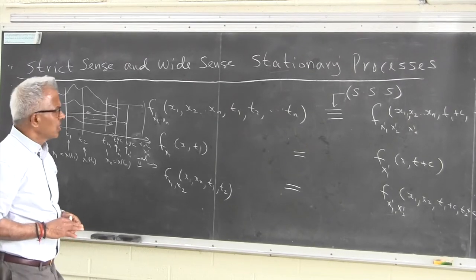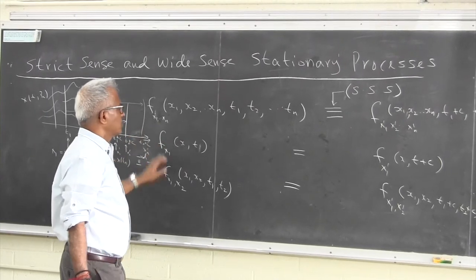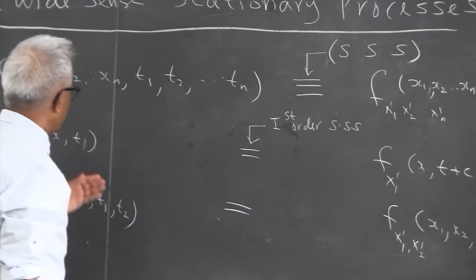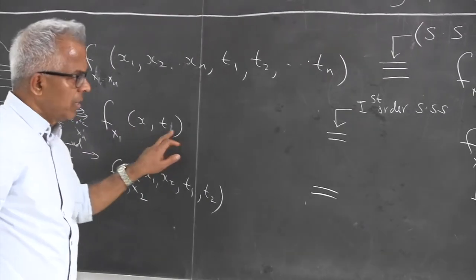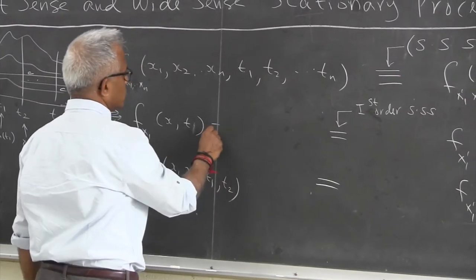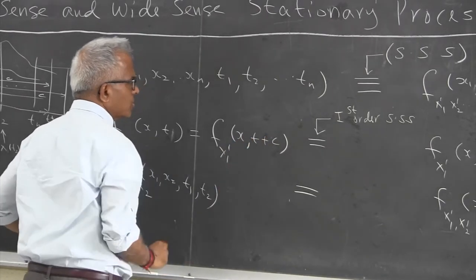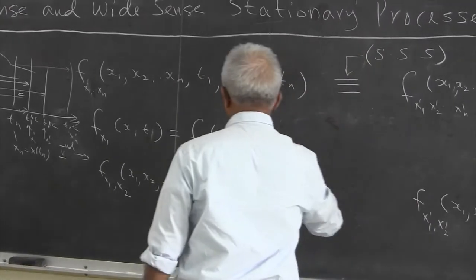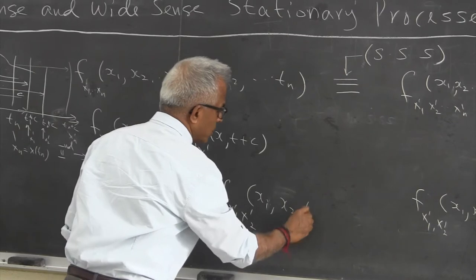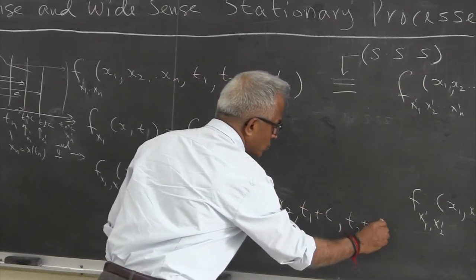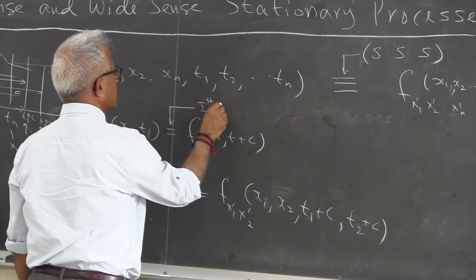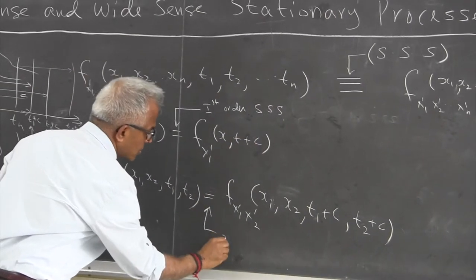We can also speak of first order and second order strict sense stationarity. The first order strict sense stationary condition means the density function of the random variable x1 generated at t and its shifted version generated at t plus c should be the same for all c. Similarly, the second order strict sense stationary condition means the random variables x1 prime and x2 prime generated at t1 plus c and t2 plus c should have the same joint density as the original. This holds for all c.